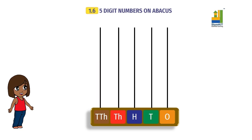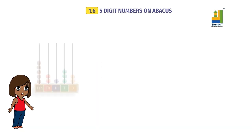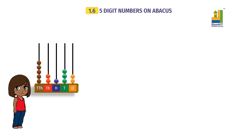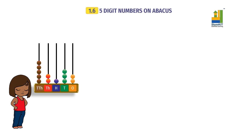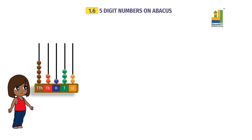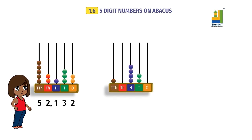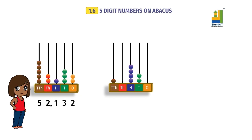That was great. Just by adding beads to the spikes you can change a number. Let us check your knowledge now. What is the number represented by the first abacus? You have to merely see how many beads are in each place value and add them. You can also write the number of beads side by side. Did you get it? It is fifty-two thousand, one hundred and thirty-two. Let us see another abacus. The number is ten thousand, four hundred and twenty.